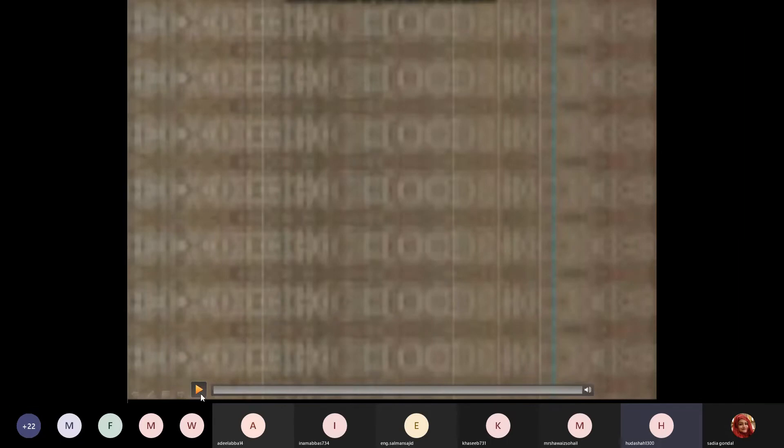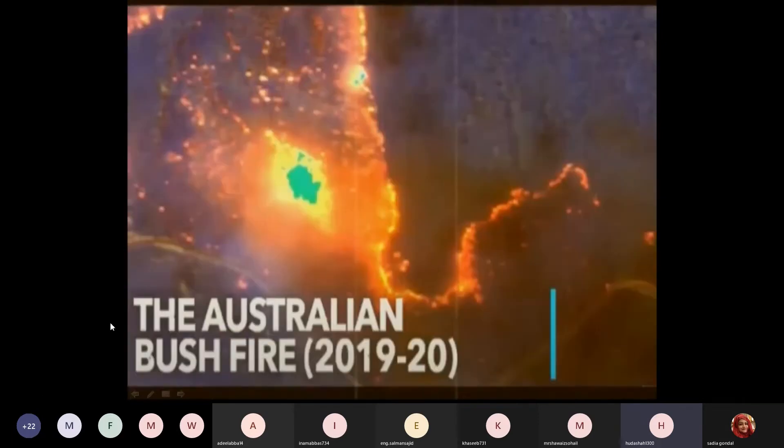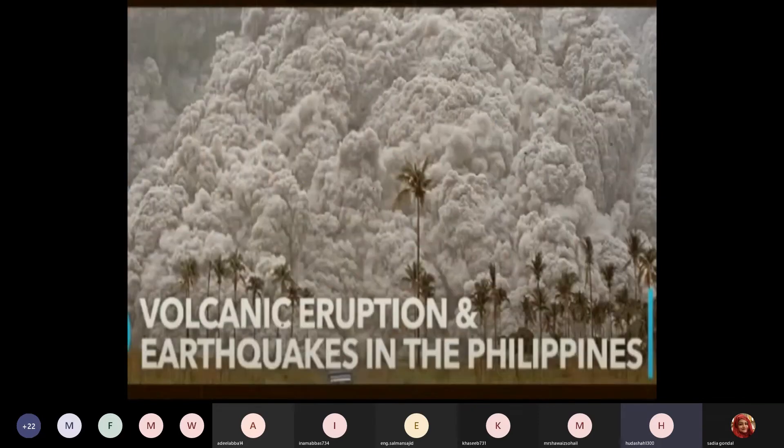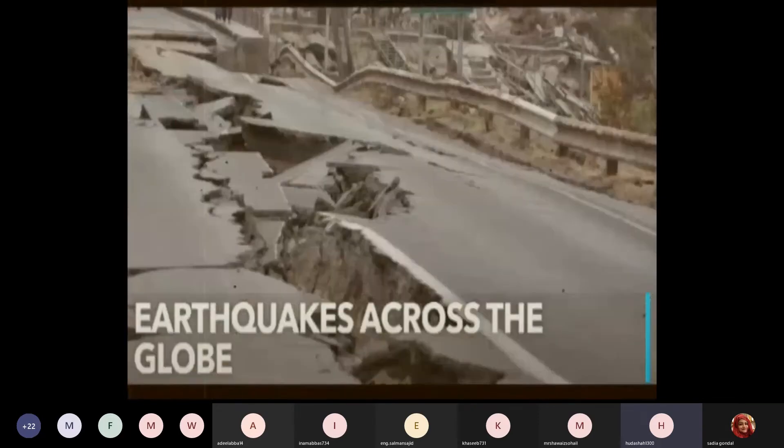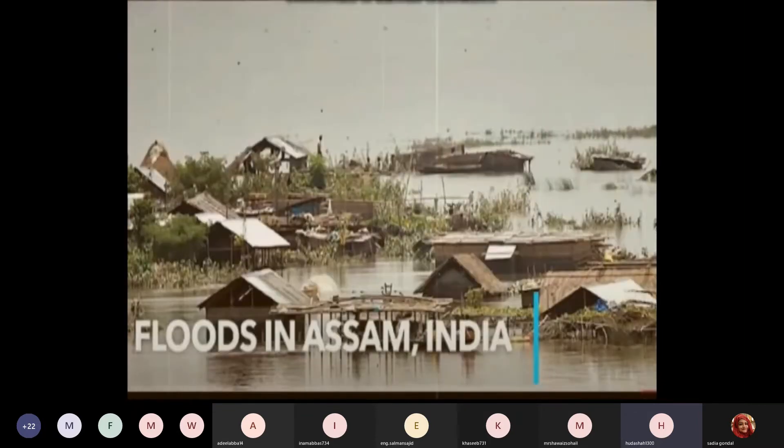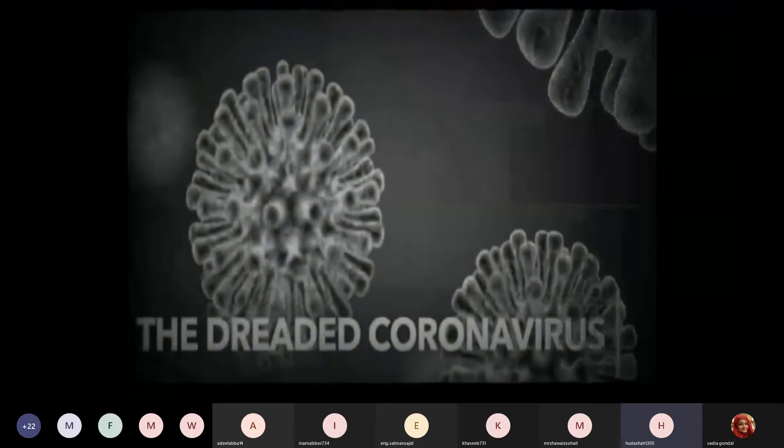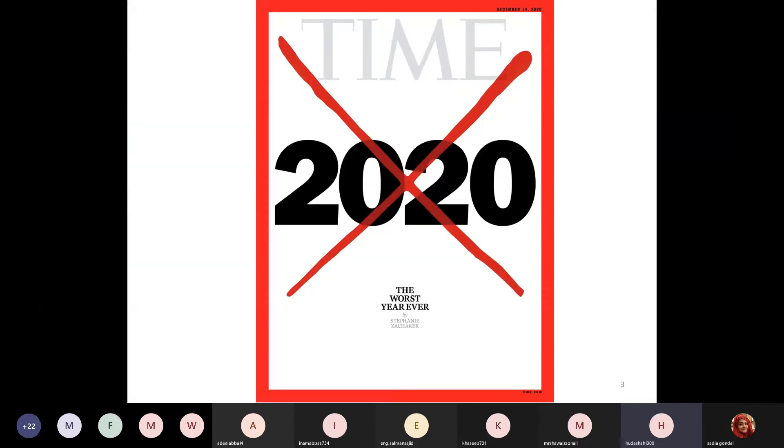2020 was a devastating year. We had devastating floods in Indonesia, Australian bushfires, volcanic eruptions and earthquakes in the Philippines, earthquakes across the globe, floods in India, and the dreaded coronavirus that took hundreds of millions of lives and officially declared 2020 as the worst year ever.